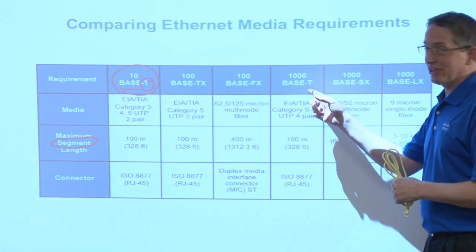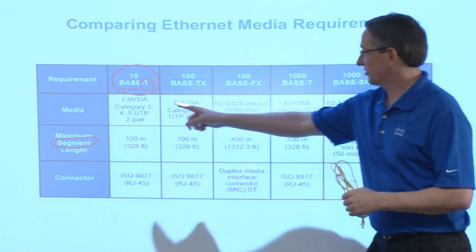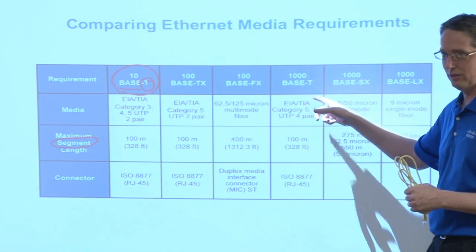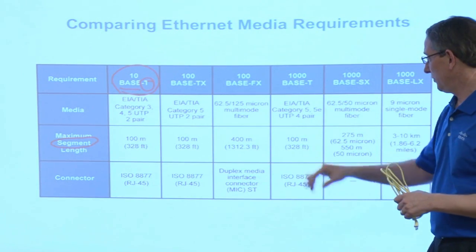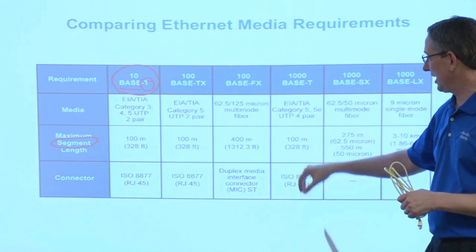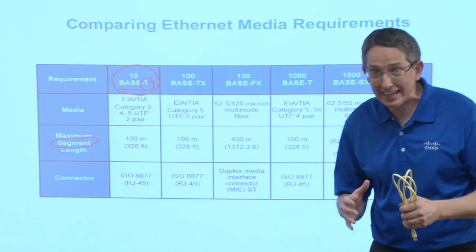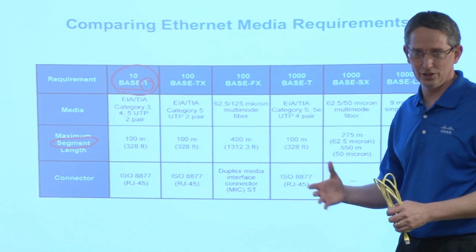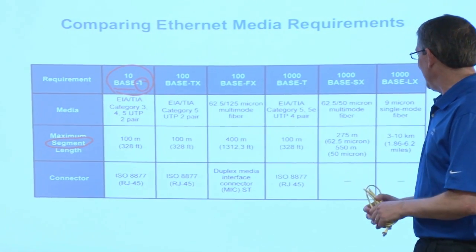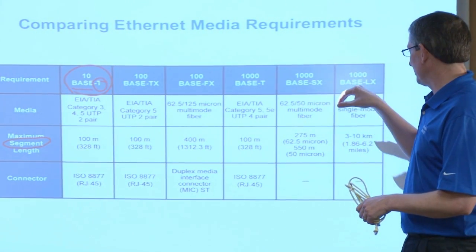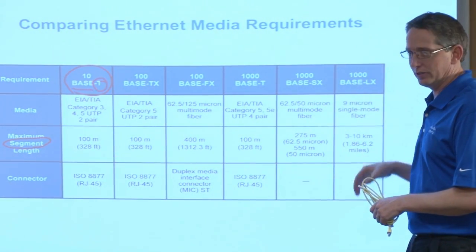Up here we're back to copper. So: copper, copper, fiber. And then 1000BASE-T — also commonly called Gigabit Ethernet. For that we need Cat5e or better. If you're putting cabling in today, you'd want to do at least Cat6, because whatever's coming next is going to require that. Then we have 1000BASE-SX, which is fiber, and 1000BASE-LX, which is also fiber.